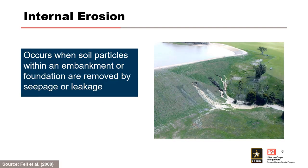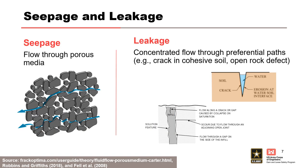Internal erosion occurs when soil particles within an embankment or foundation are removed by seepage or leakage. Put another way, it requires a soil particle that can move and somewhere for it to go. Seepage describes flow through a porous media — for example, flow through the void space of a coarse-grained soil — whereas leakage describes concentrated flow through preferential open pathways.